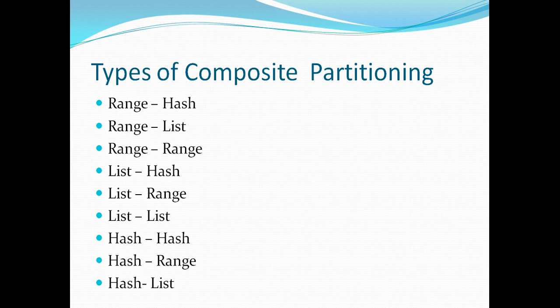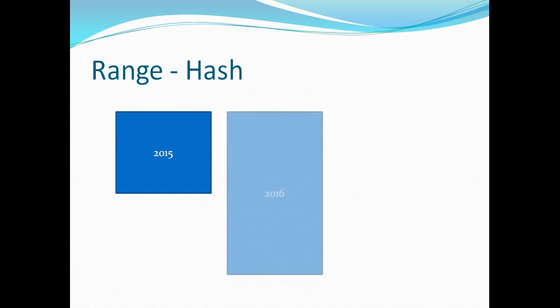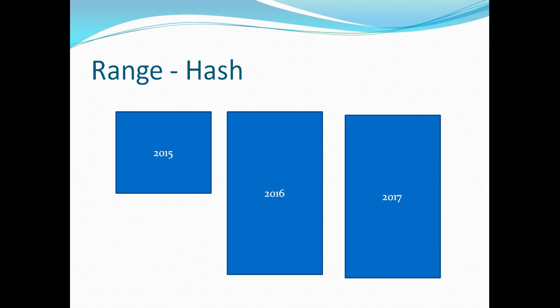Let's discuss range-hash partitioning. As a warehouse manager of a retail organization that started three years back, in 2015 the data was not significant — we had created a partition on the basis of range, segregating data by year. The organization has grown significantly since then, so we have significant amounts of data in 2016 and 2017. In a clustered environment, I can implement hash partitioning on top of range partitioning. One important point is that the number of sub-partitions can be different inside each partition.